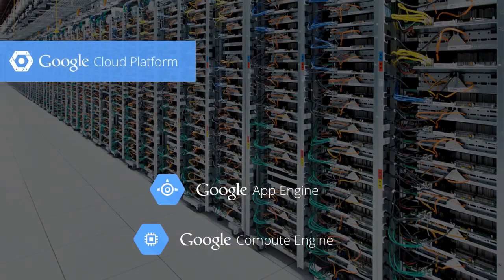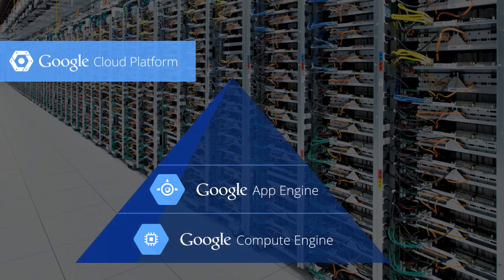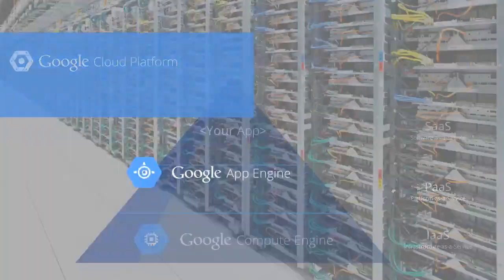Applications run on the Google Cloud Platform using Compute Engine, our raw infrastructure as a service. It is the fundamental building block for services such as Google App Engine, our platform as a service. This allows you to build your own software as a service at the top of the pyramid stack.